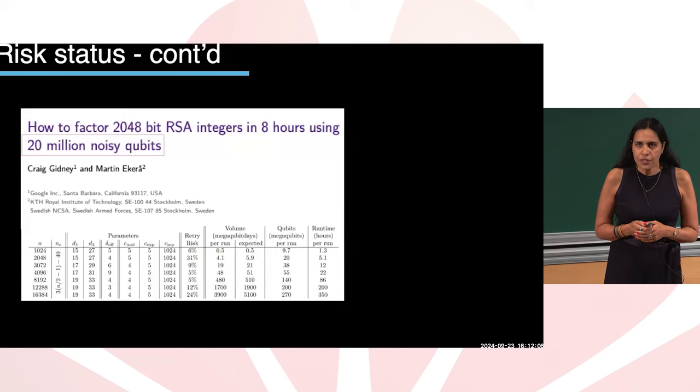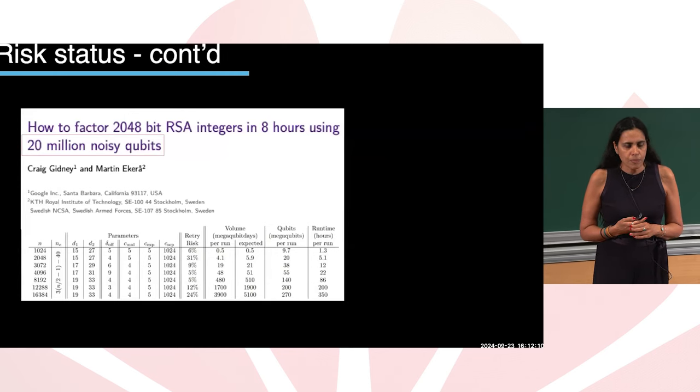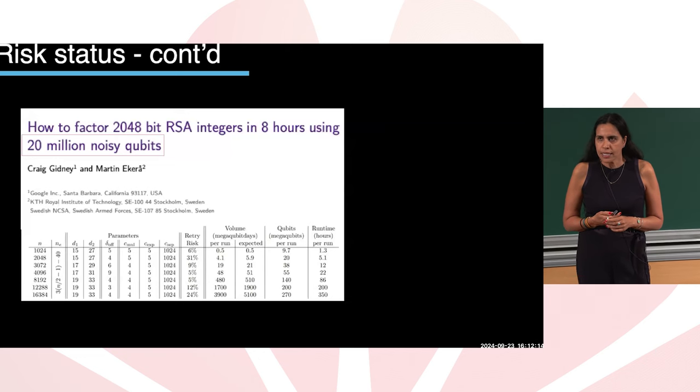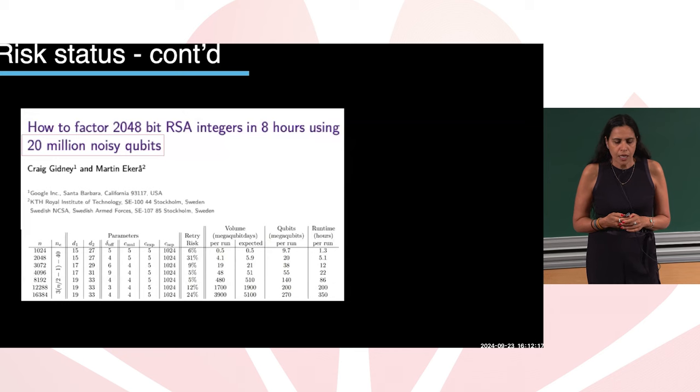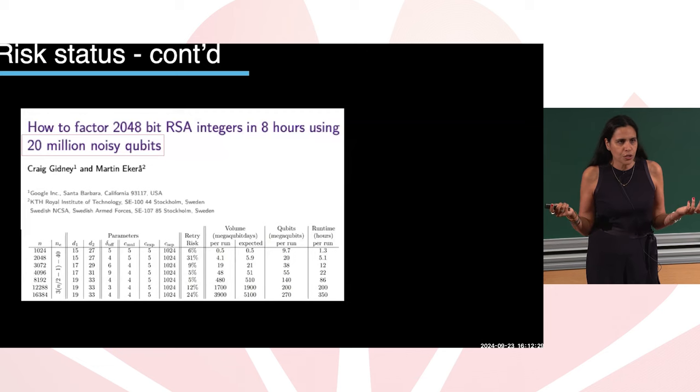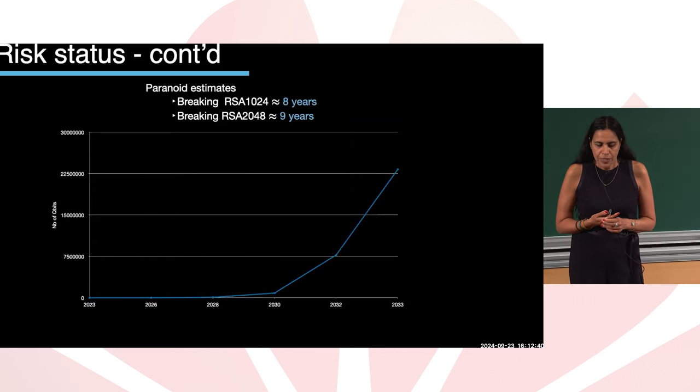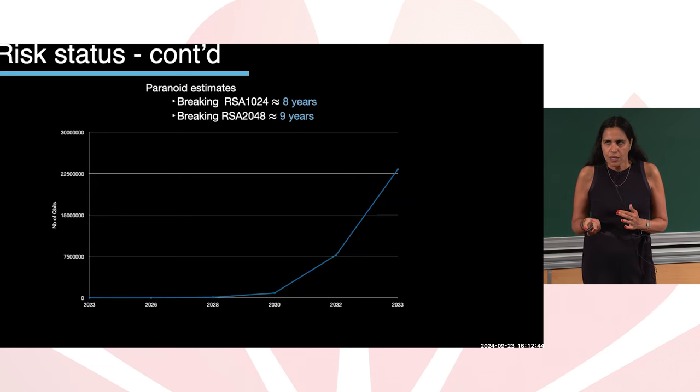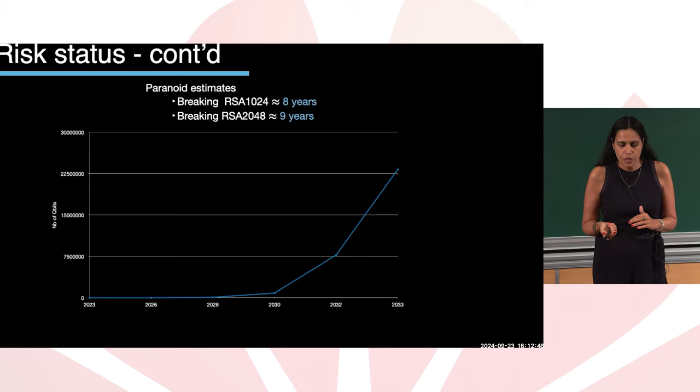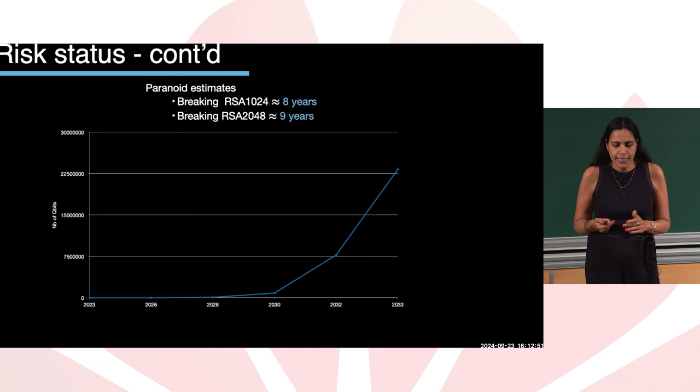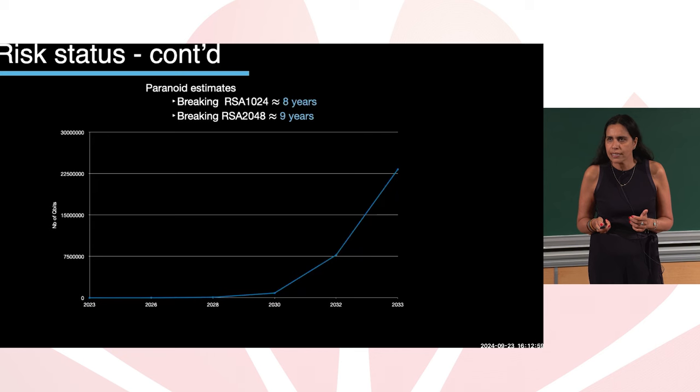So let's continue on the risk status. There is a recent paper by Gidney and Ekerå that shows how to factor 2048 bit RSA integers in 8 hours using 20 million qubits. You may say we don't have large-scale quantum computers. So what is the paranoid estimate? Researchers estimate that around eight, nine years there will be powerful enough quantum computers to break RSA 2048 bit.